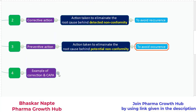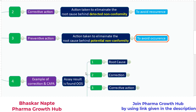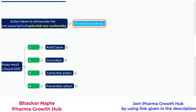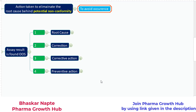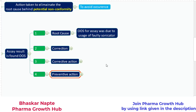Now let us talk about an example. I have taken an example of an OOS result where the assay result is found to be out of specification. As part of investigation, you are going to identify the root cause, and once identified, you define the correction, corrective action, and preventive action. According to the investigation, the OOS for assay was due to usage of a faulty sonicator. The sonicator is your extraction tool — it extracts the sample from the sample matrix. If the sonicator is faulty, there can be poor extraction, which further leads to a poor assay result. So the root cause is: usage of a faulty sonicator.